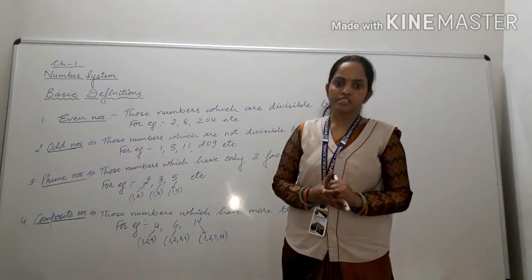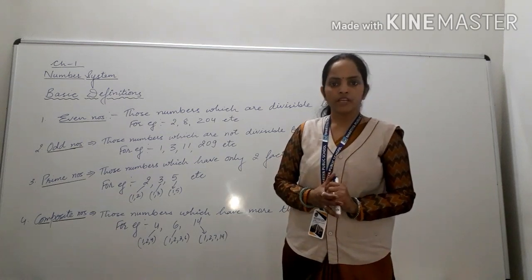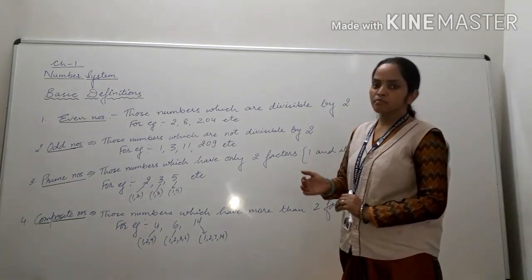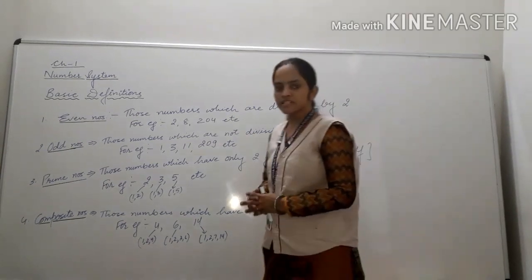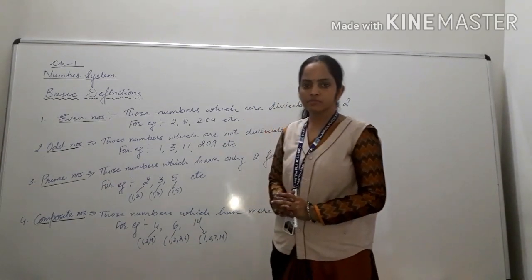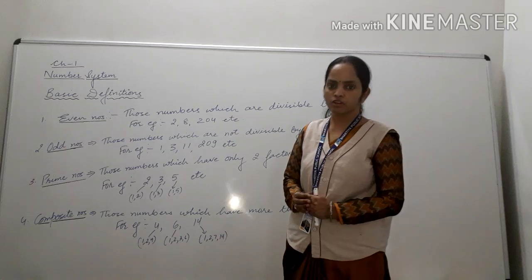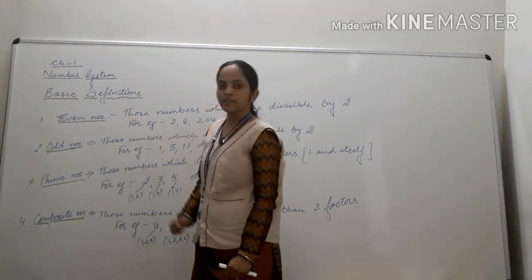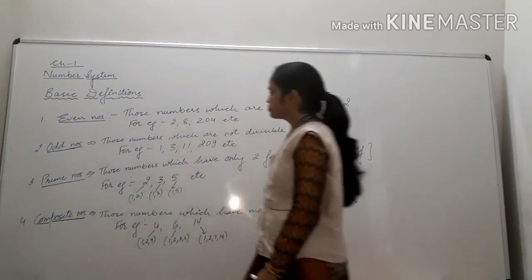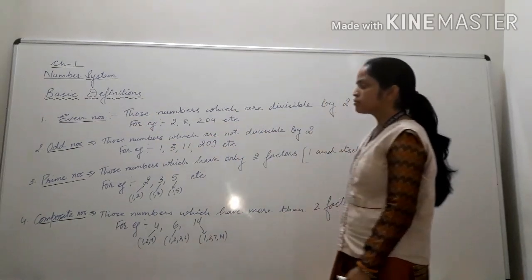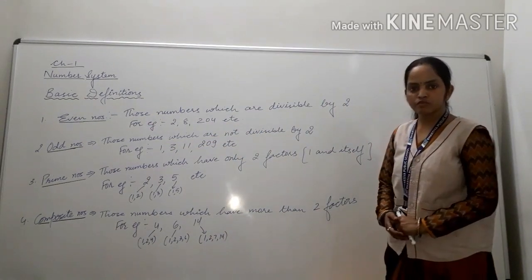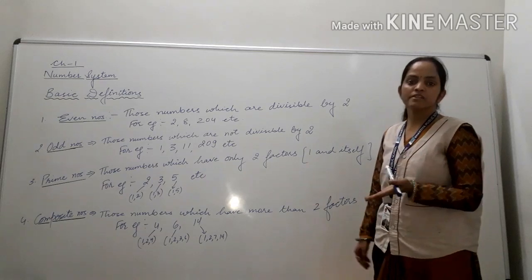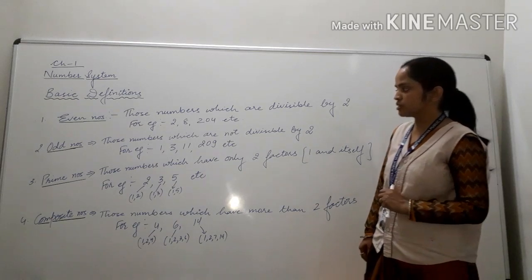I gave you definitions and you might have recalled them. Now moving ahead, we will discuss some more numbers which you have already studied in your previous class, but I am giving you a brief recall. First of all, what are even numbers? Those numbers which are divisible by 2 are known as even numbers — they are multiples of 2.